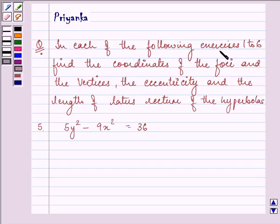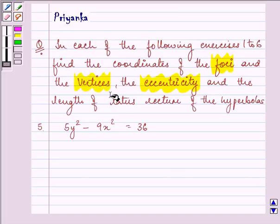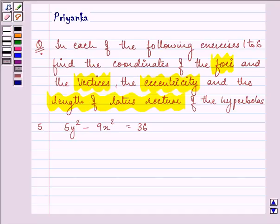In each of the following exercises, find the coordinates of the foci and the vertices, the eccentricity, and the length of the latus rectum. Now here the given equation of the hyperbola is 5y² - 9x² = 36.